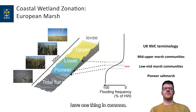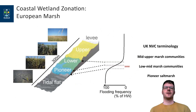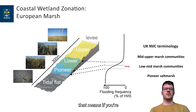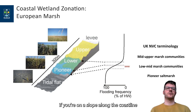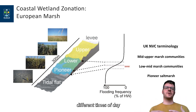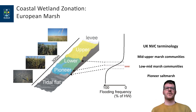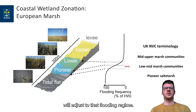Intertidal wetlands have one thing in common: they're all zoned according to the inundation. Basically, that means if you're on a slope along a coastline and you have the tide coming in and out at different times of day and different seasonalities, you will have a gradient of inundation frequency and also inundation duration. And the plant communities will adjust to that flooding regime.